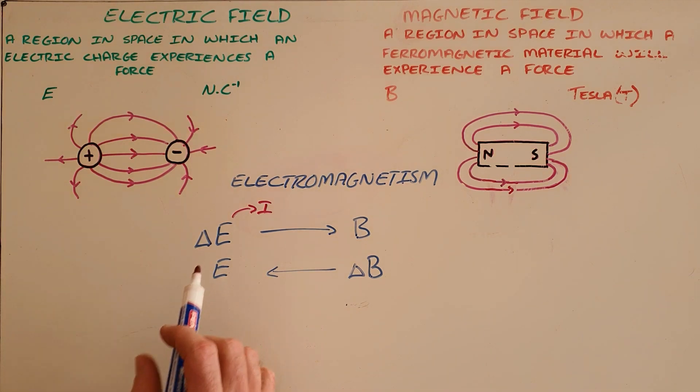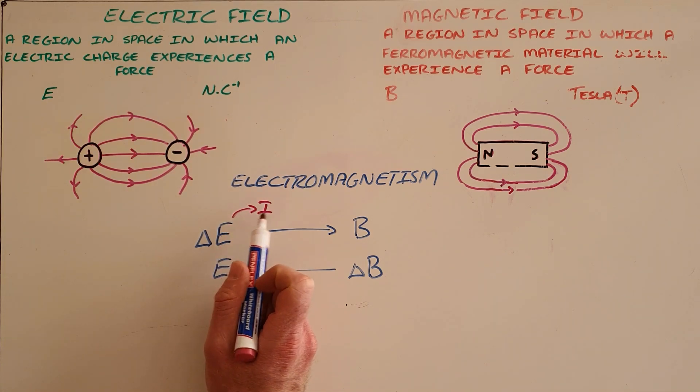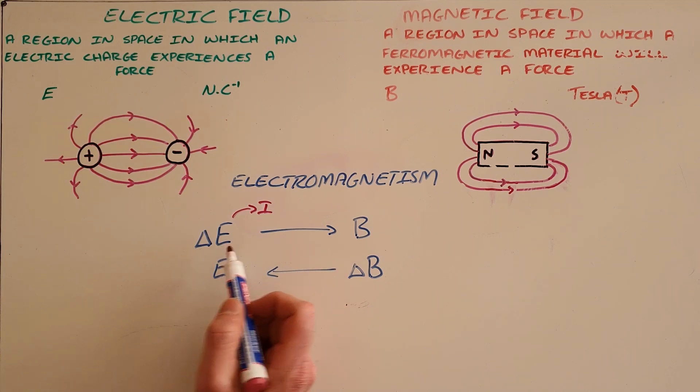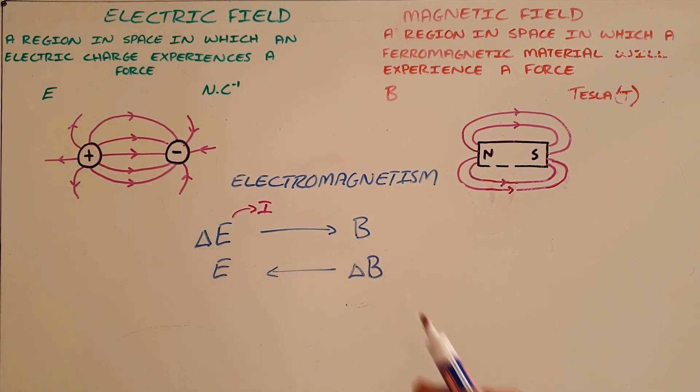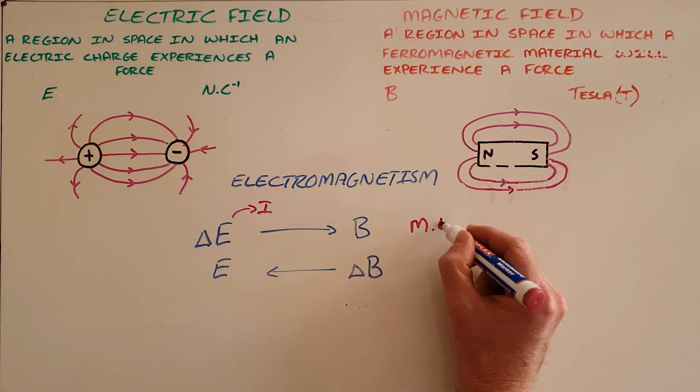So essentially what we are saying here is that a changing electric field, which is a result of a current, or a current that is a result of a changing electric field, will always induce a magnetic field, and this is known as the motor effect.